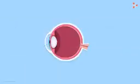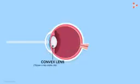What happens next? The light that enters through the pupil falls on the lens behind it. The lens is a convex lens, which is thicker at the center than the edges. It's a converging lens, meaning it focuses all the light at one point.